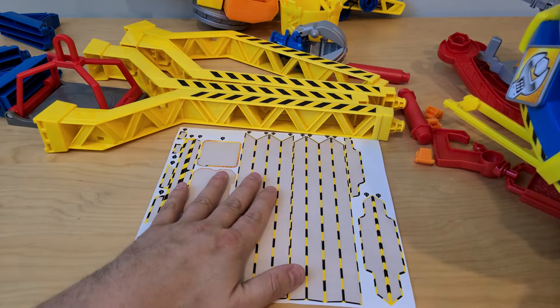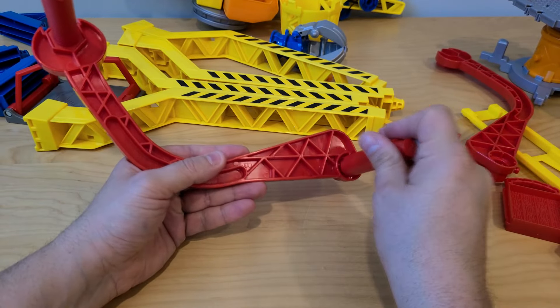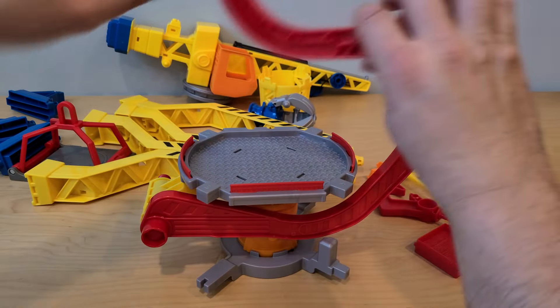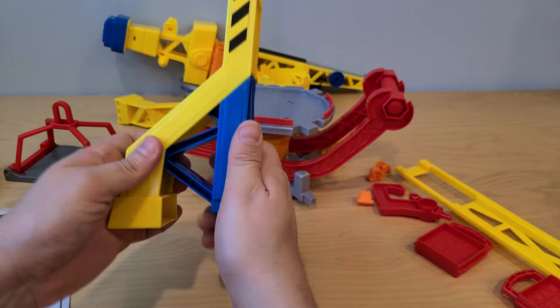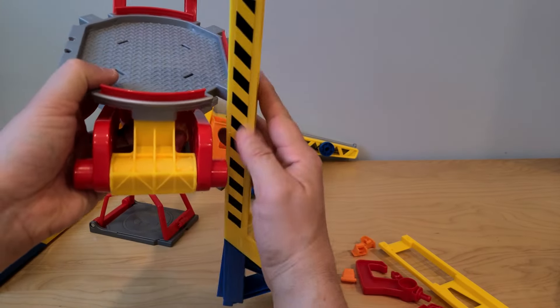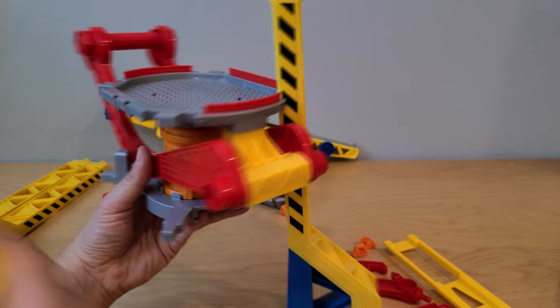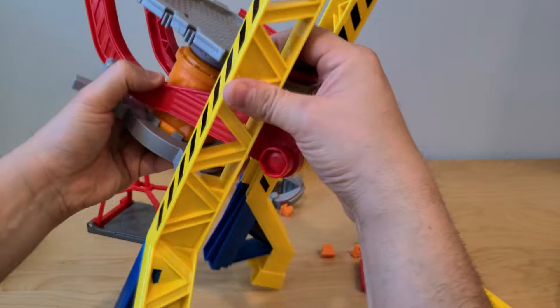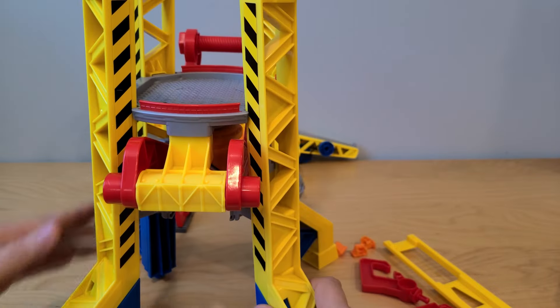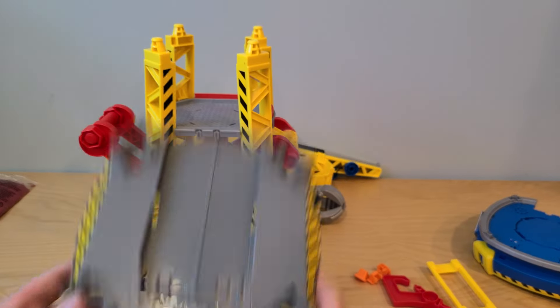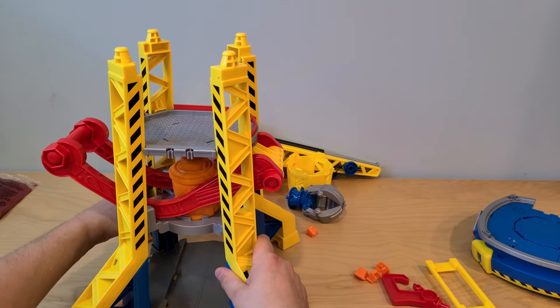Now that we got all of our stickers, let's start building the crane. Let's slowly start attaching everything to one another. Here's one leg of our crane. Here's gonna be another one and the back ones. Looking good. Now let's put in this bottom plate and snap everything into place. There we go.